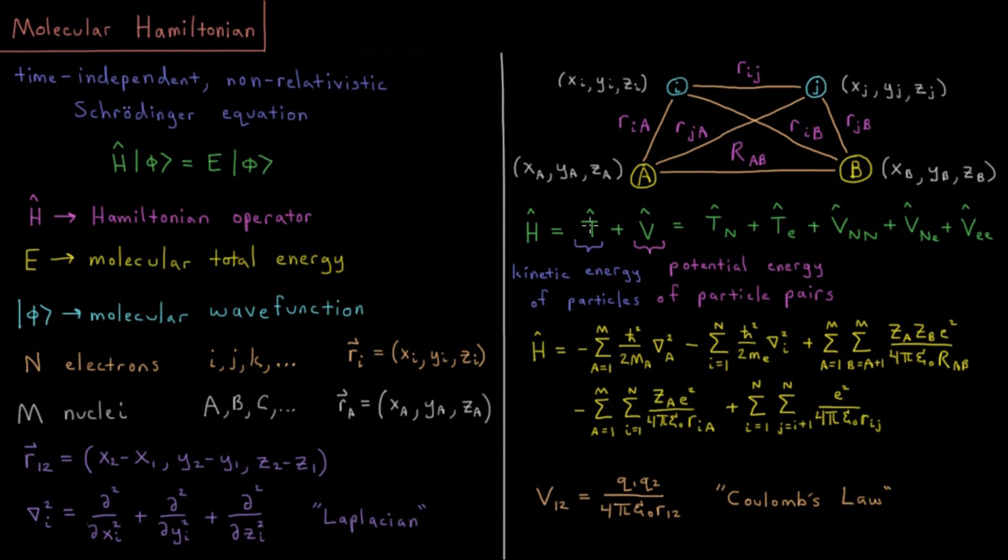We can split kinetic energy into nuclear and electron kinetic energy, two types of particles. I can split potential energy into three terms: nuclear-nuclear repulsion (nuclei of the same charge repel, being positively charged), nuclear-electron attraction (opposite charges attracting), and electron-electron repulsion (two negative charges repel).